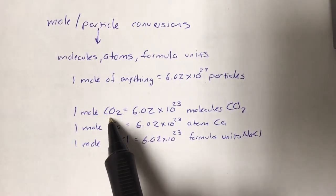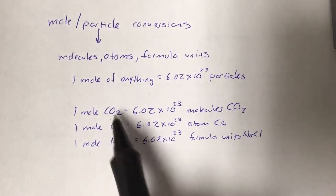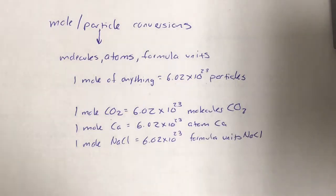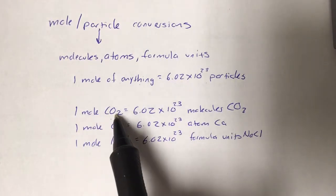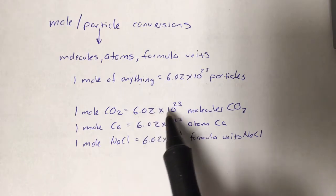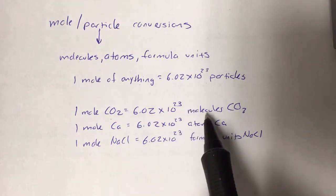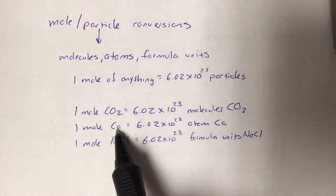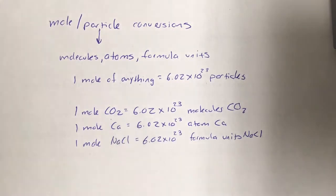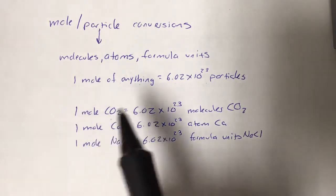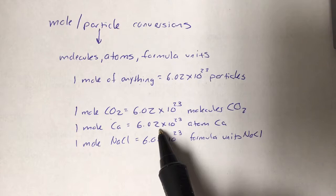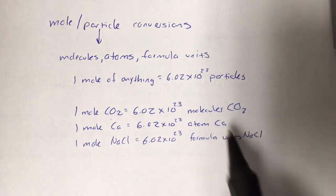With covalent substances like carbon dioxide — two nonmetals, covalent bond — we use the word 'molecules.' So we would say one mole of carbon dioxide equals 6.02 times 10 to the 23rd molecules of carbon dioxide. When dealing with elements like calcium, the word changes because elements aren't made of molecules — they're made of atoms. So one mole of calcium is 6.02 times 10 to the 23rd atoms of calcium.